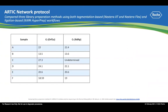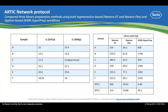A team from Thailand and the UK compared three library preparation methods: Nextera XT, Nextera Flex, and KAPA HyperPrep in the ARTIC network protocol. They processed six COVID-19 patient samples and two negative human controls. The table shows the CT values of the six COVID-19 patient samples. The library yields generated from KAPA HyperPrep were significantly higher than those from the two tagmentation workflows.